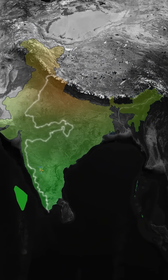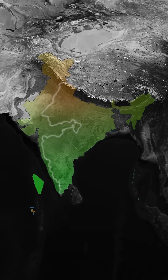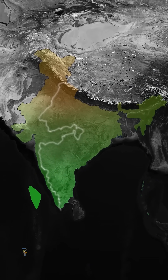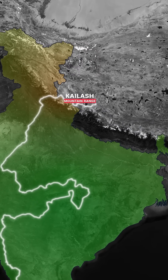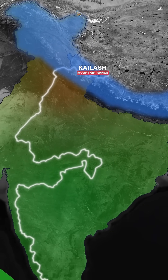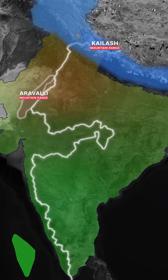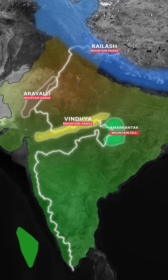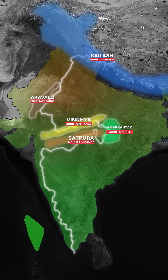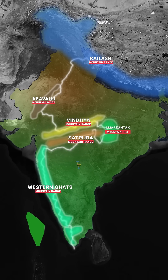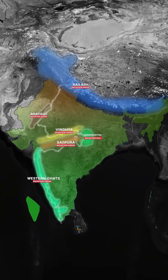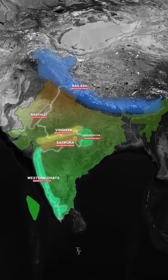This mountain divide is formed by a series of mountain ranges, including the Kailash Range of the Himalayas in the north, followed by the Aravalli Range, the Vindhya Range, the Ajanta Satpuras, the Satpura Range, and the Western Ghats. Tell us in the comments which river originates near your city.